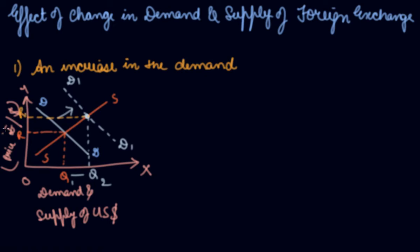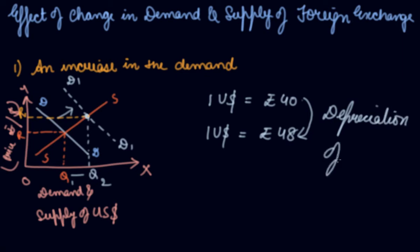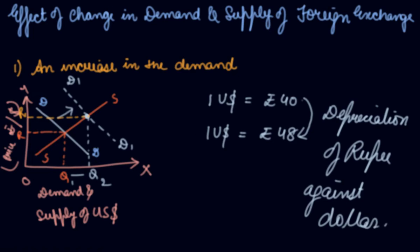So if demand has increased from Q1 to Q2, your exchange rate has increased to R1. Numerically, before your 1 US dollar was exchanged for, let's say, rupees 40, but now your 1 US dollar is exchanged for rupees 48. This is the rise in the foreign exchange rate because of the increase in the demand for US dollars in India. This is the depreciation of rupee against dollar.